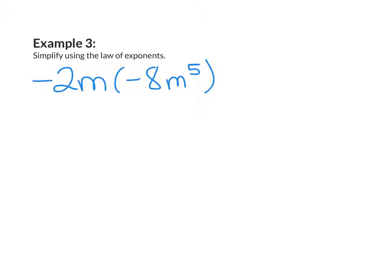Example 3: Simplify using the law of exponents. Negative 2m times negative 8m to the 5th power. Since I have coefficients, I'm going to multiply those together first. Negative 2 times negative 8 gives me positive 16. And m, since it doesn't have an exponent, I know that means it's m to the power of 1. So m to the power of 1 times m to the power of 5 — I'm going to add those together, and that gives me m to the power of 6. So my answer is 16m to the power of 6.